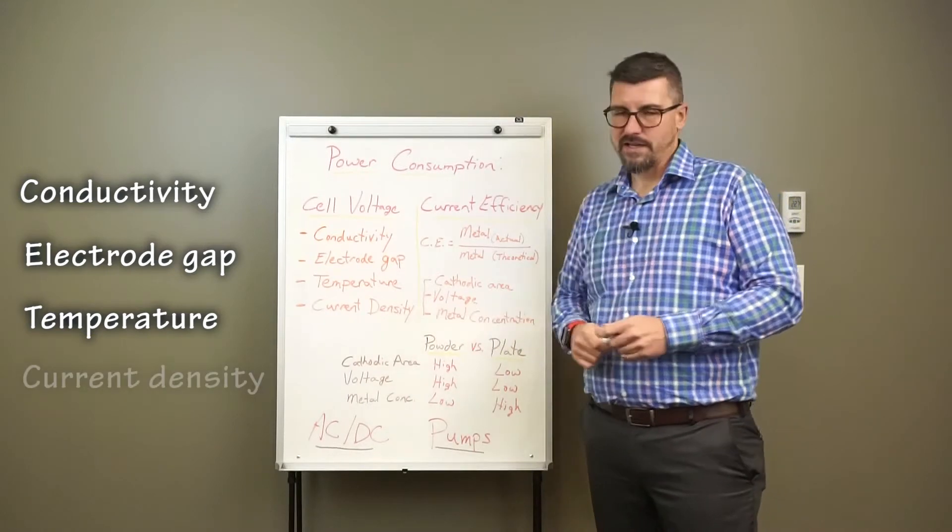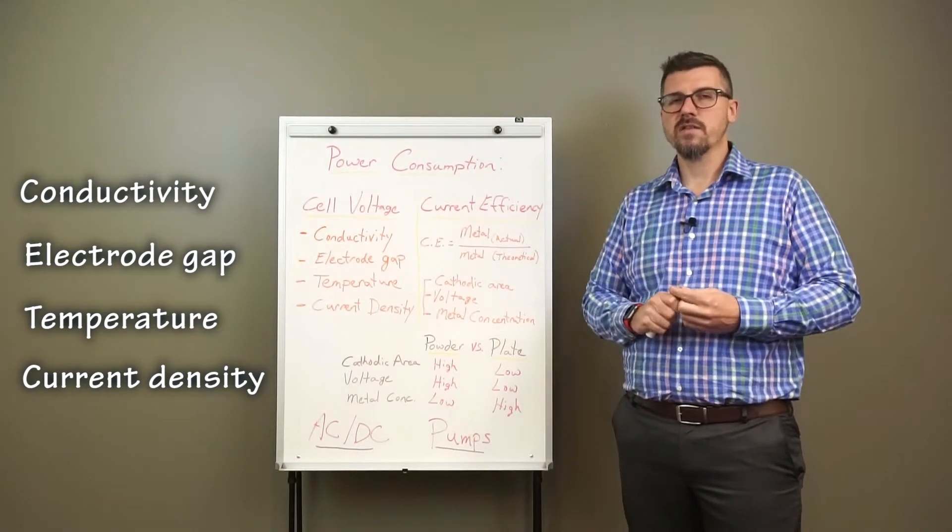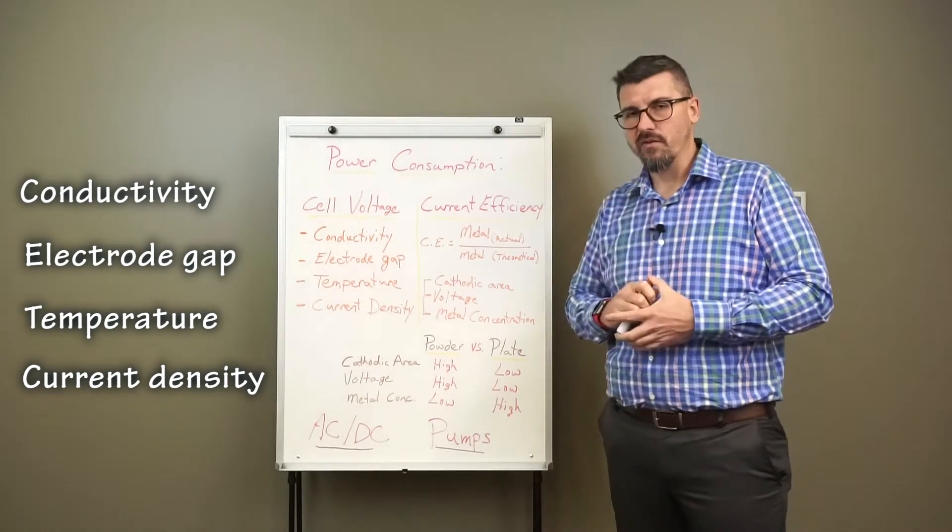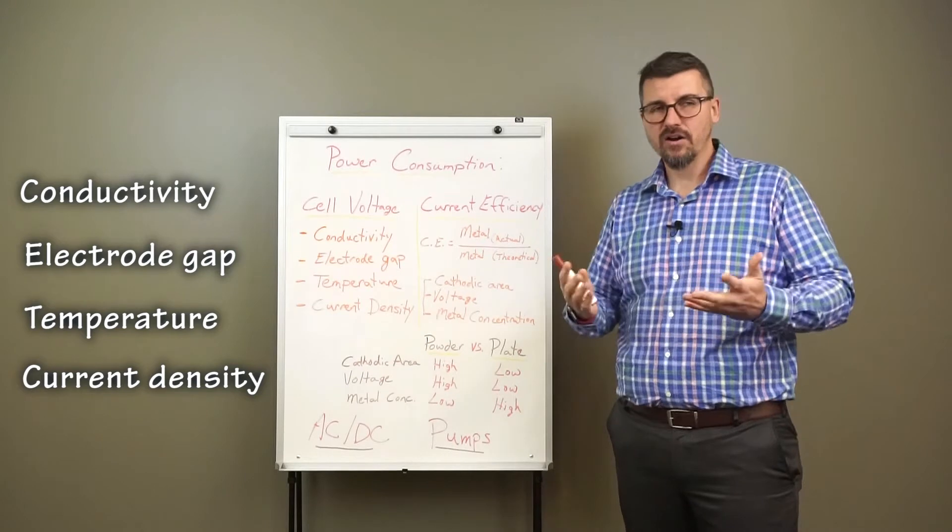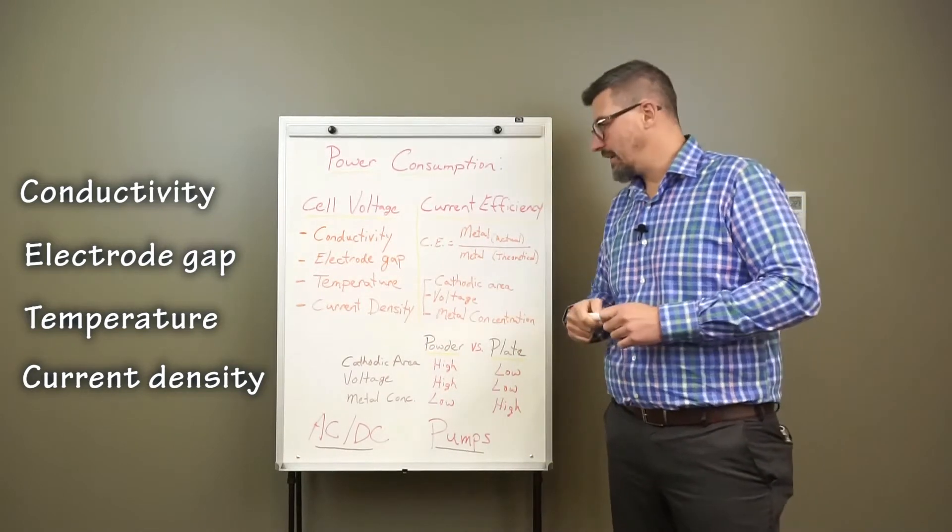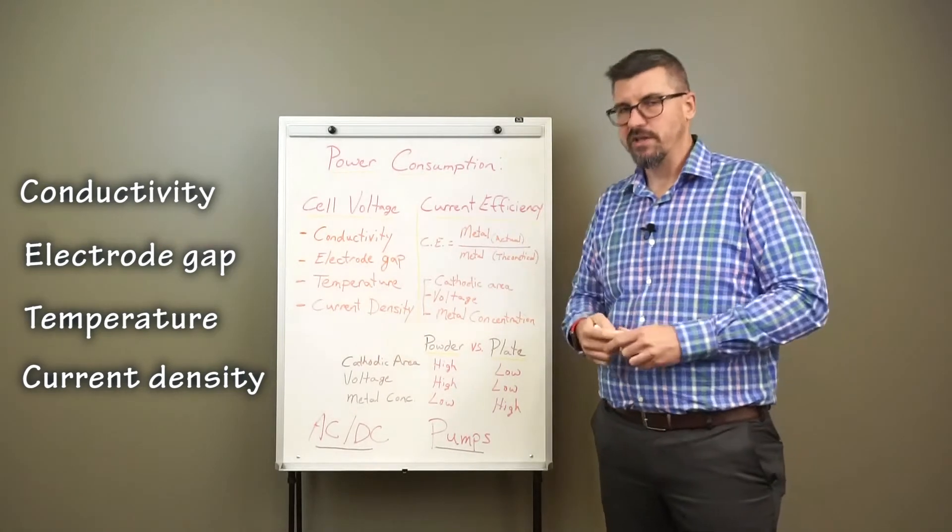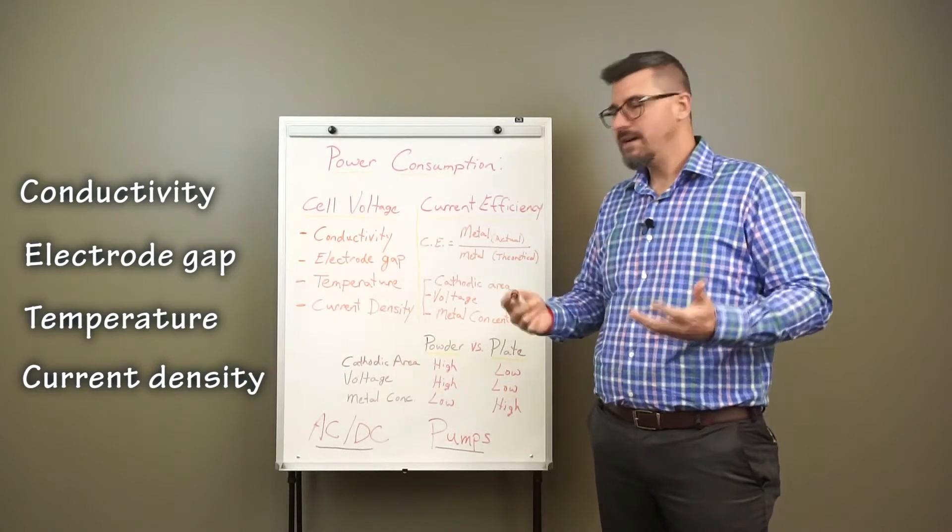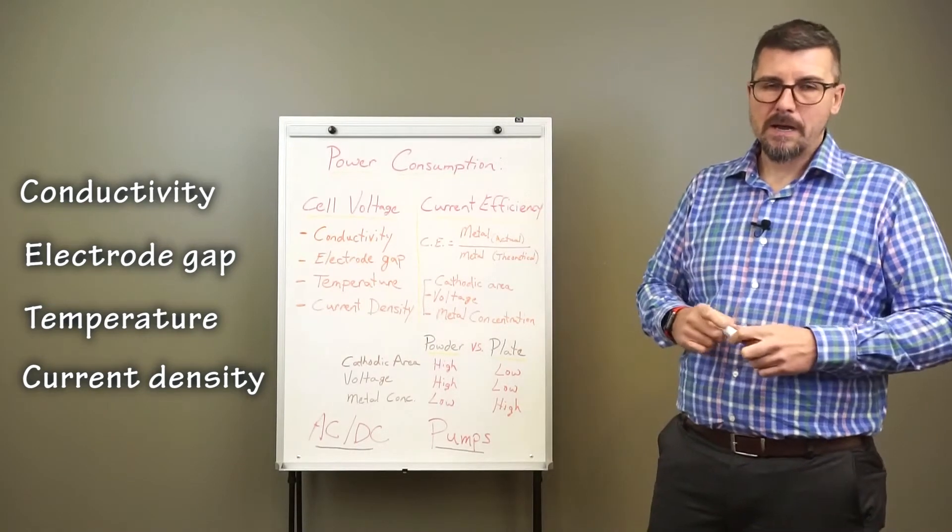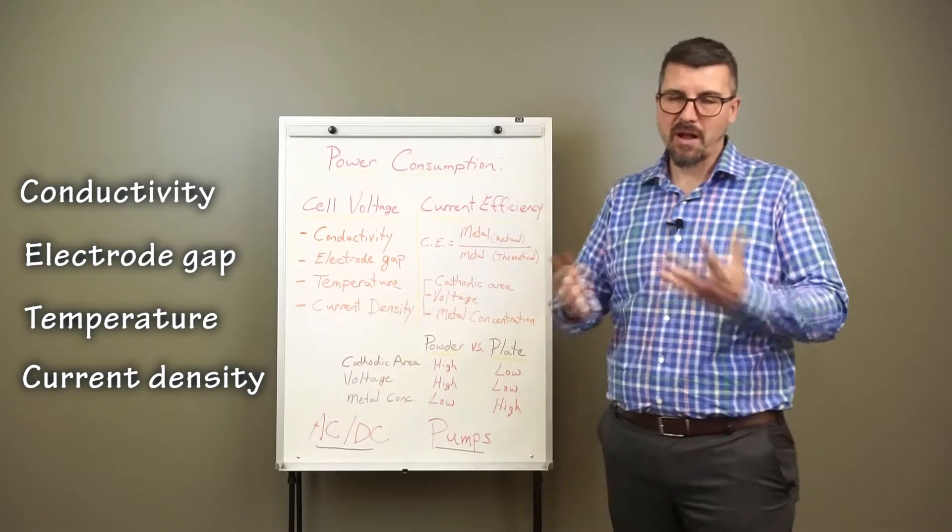And finally, the current density. EMU will generally run at a higher current density than you'll find with conventional electrowinning cells. And there's a misconception out there that operating at a higher current density with EMU will result in higher power consumption. And what we've found, actually, is throughout the course of the electrowinning process, the solution will increase in temperature. And this rise in temperature, which we discussed in the third point, will actually offset the slight increase in voltage from operating at a current density. So they'll balance themselves out.